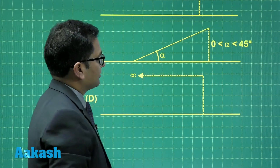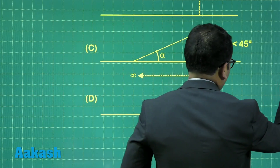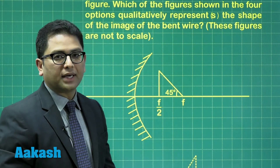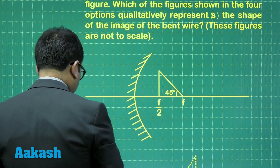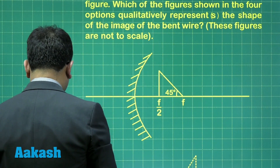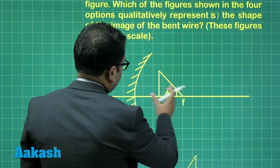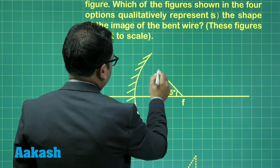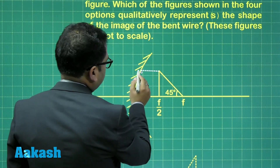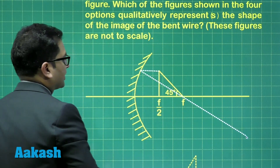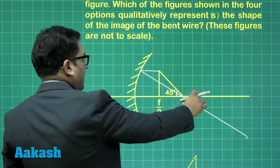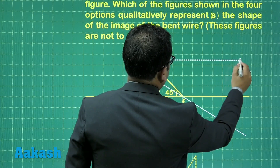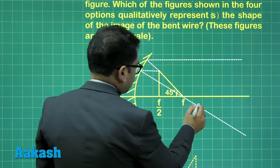This is a very good question. Let's do it qualitatively. All portions of the object will form virtual images. Let me plot the image of a point lying at f/2. One ray goes parallel to the principal axis, then passes through the focus after reflection. Another ray passes through the focus and goes parallel to the principal axis on reflection. These are the two reflected rays.